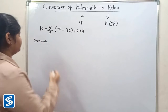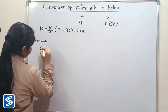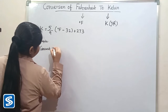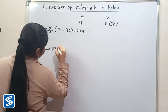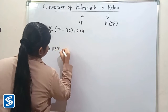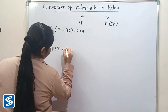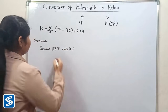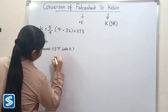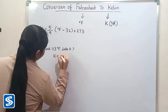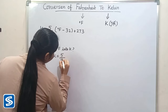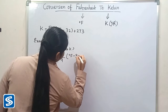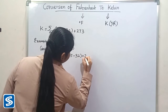For example, we will convert 113 degree Fahrenheit into Kelvin. We already know that Kelvin is equal to 5 by 9 multiplied by degree Fahrenheit minus 32, plus 273.